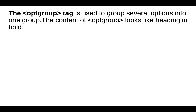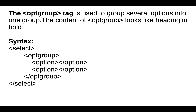The option group tag is used to group several options into one group. The content of the option group looks like a heading in bold. The syntax is: first we open the select tag, then we open the option group tag, then in between we use option tags, and last we close the option group tag and end with the closing select tag. The next form element is the textarea tag.